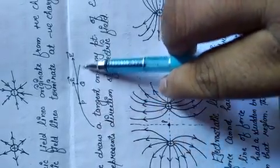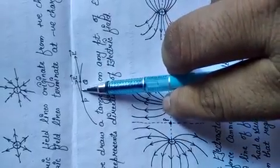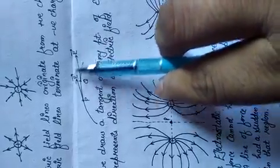If this is the electric field line and we want to determine the electric field direction, then draw a tangent at any point. This tangent gives the direction of the electric field.